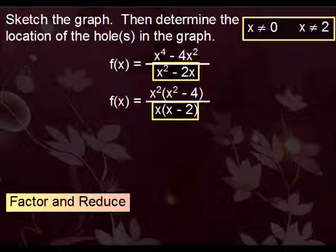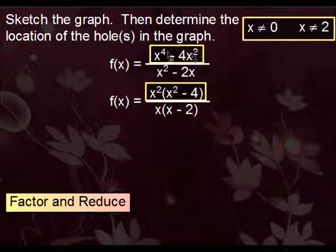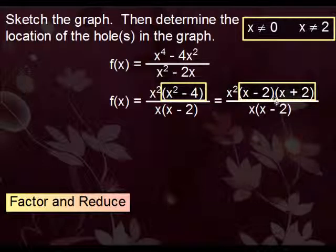We already know the denominator. We've done the work for that. It factors out to x times x minus 2. For the numerator, x squared factors out of both terms to give us x squared times the quantity x squared minus 4. Hopefully you see that this part here is the difference of two squares. x squared minus 4, which means we can take this even further. That's x minus 2 times x plus 2.